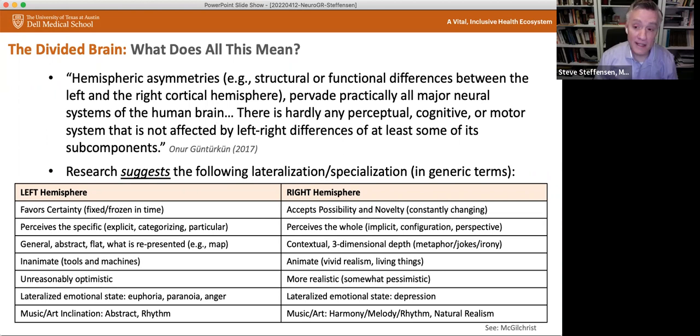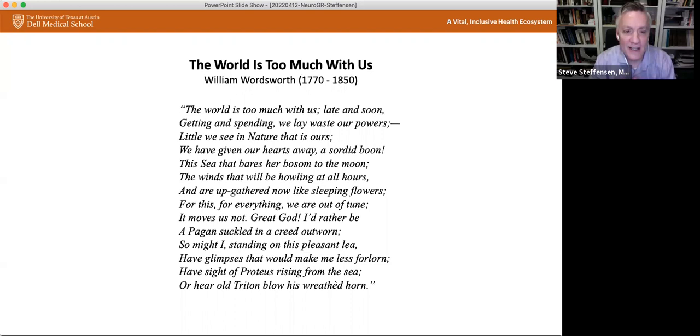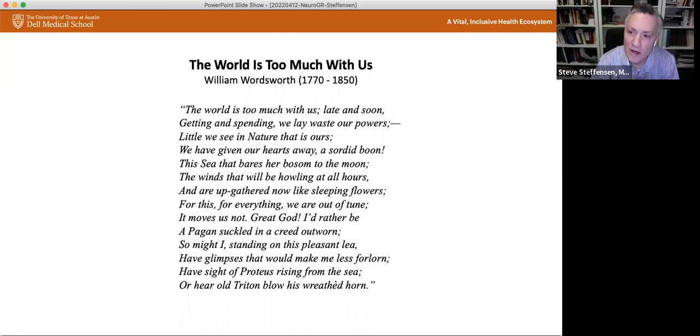The left hemisphere tends to be unreasonably optimistic. The example of the patient I gave who seemed to ignore her deficits and wasn't really concerned about the deficits at all and seemed to be doing fine. There's nothing wrong with her. Whereas the right hemisphere takes a more realistic and often somewhat pessimistic view of the world tends to be the doubter saying, well, what if that's not right? Emotional states, it's a very hard thing to talk about lateralization of this, but in general, euphoria, paranoia, and what we talked about with anger being highly lateralized to the left hemisphere, whereas the right hemisphere tends to be more of a depressive sort of state when activated. In terms of musical or art inclination, it's not that the left hemisphere cannot appreciate art or appreciate music, but it tends to be more abstract, tends to be more focused on the rhythm of music, whereas the right hemisphere tends to be more natural realism in artwork and tends to have more of an appreciation for harmony, melody, and rhythm.